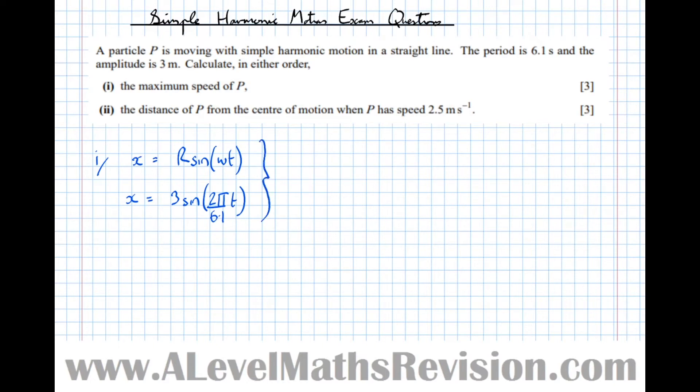It wants the maximum speed of the particle, so let's use the dot notation now which means differentiate it once with respect to time. We get x dot equals 3 cos of 2 pi over 6.1 t times the differential of what's in the bracket, 2 pi over 6.1.